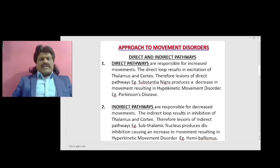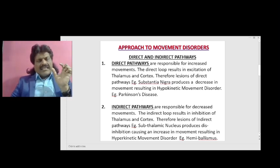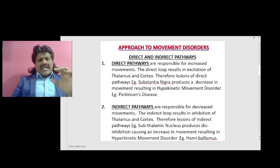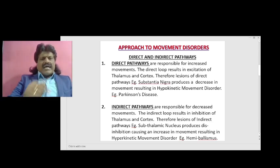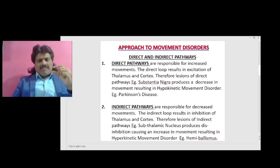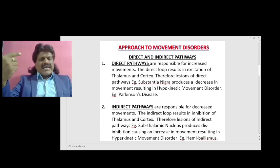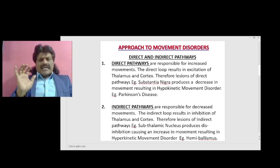At the other end of the spectrum, we have the hyperkinetic movement disorder, example hemibalismus. It is because of the lesion in the indirect pathways. The indirect pathways are responsible for decreased movements; the indirect loop results in inhibition of thalamus and cortex. Therefore, lesions of the indirect pathway — example subthalamic nucleus — produce disinhibition, causing an increase or excess in movement resulting in hyperkinetic movement disorder, example hemibalismus.